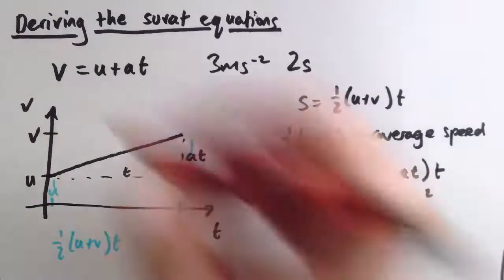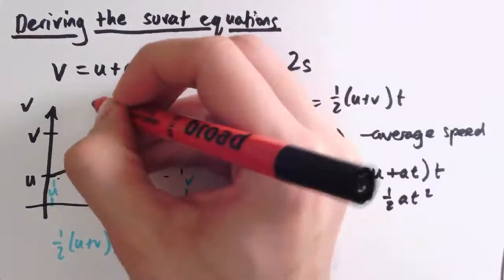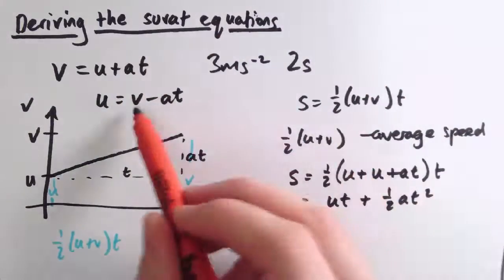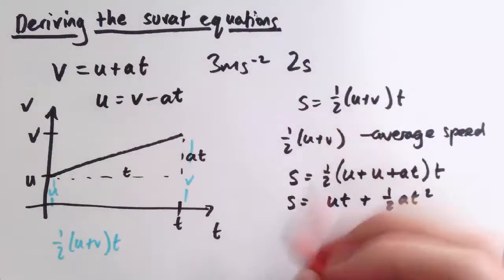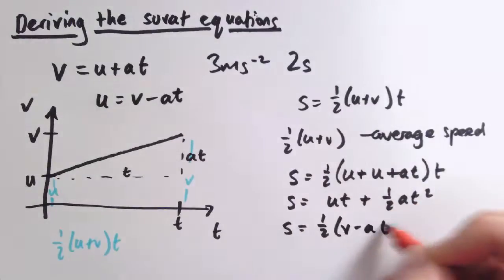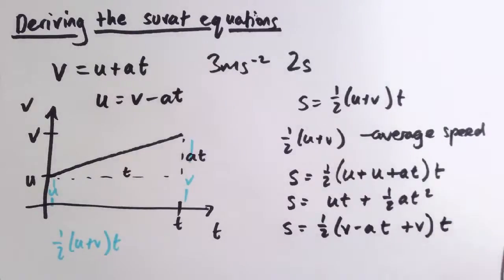And actually, if we rewrite v equals u plus at as u equals v minus at, then we could do the same thing again, substitute that into this equation here, and that gives s equals one-half v minus at instead of u plus v times t. And so multiplying that, we've got v plus v is 2v times a half times t, so that's just vt. And now minus at times a half times t is minus one-half at squared.